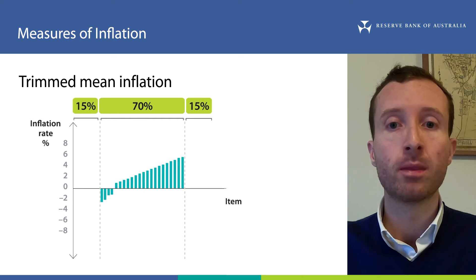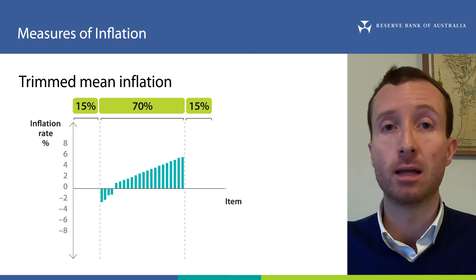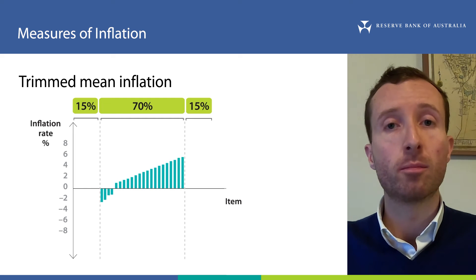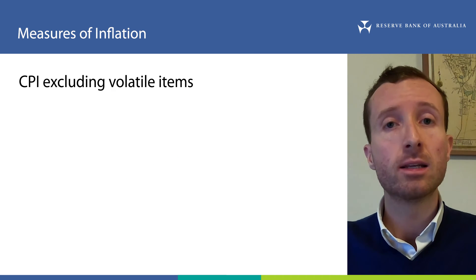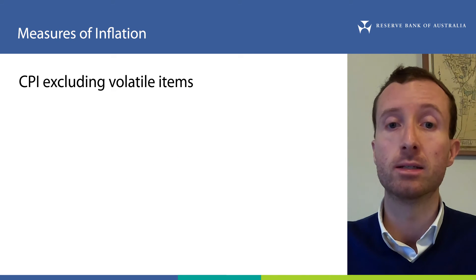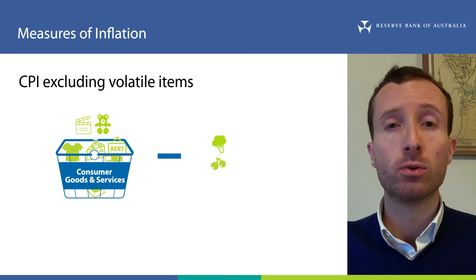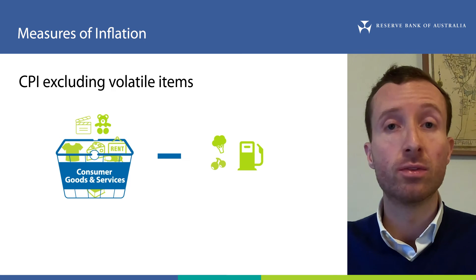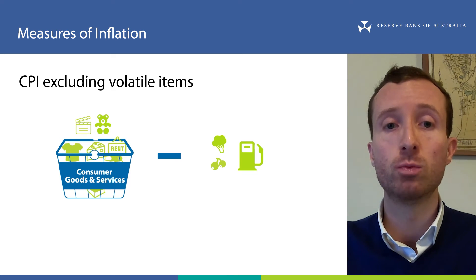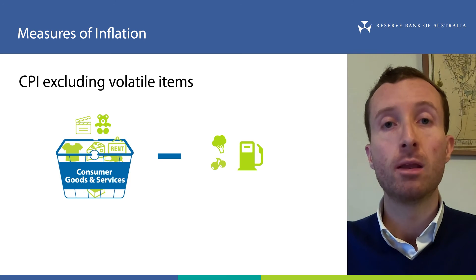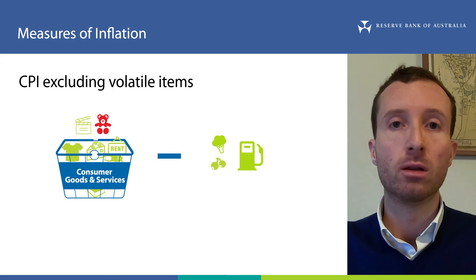Because it is calculated every quarter, the items used for the calculation, and the ones that are removed, can change each time, depending on which items had particularly large price changes. An alternative approach is to use a measure that always removes the same items. For example, the Australian Bureau of Statistics calculates a measure called CPI excluding volatile items, which is the average inflation rate of all items in the CPI basket except for fruit, vegetables and fuel. As already mentioned, prices of these items can move around a lot. Of course, this measure does not adjust for other large price changes which might affect other areas of the basket. For example, changes to the price of childcare would not be excluded from this measure.